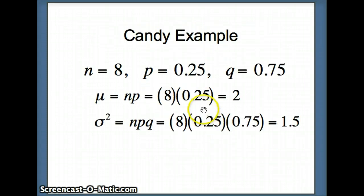So for our candy example, mu is np, 8 times 0.25 is 2. That's exactly what we had on Excel. Variance is npq, 8 times 0.25 times 0.75, we get a variance of 1.5, what we had on Excel. To get the standard deviation, you would take the square root of that.